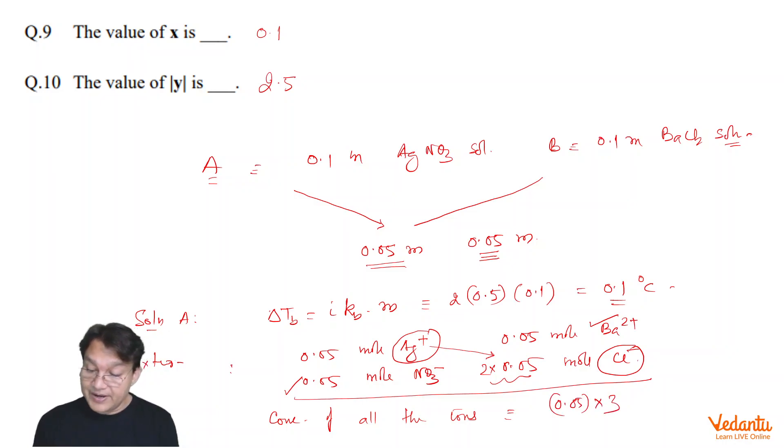0.05 due to this remaining Cl negative, 0.05 of the nitrate ion and 0.05 of the barium 2 plus ions.